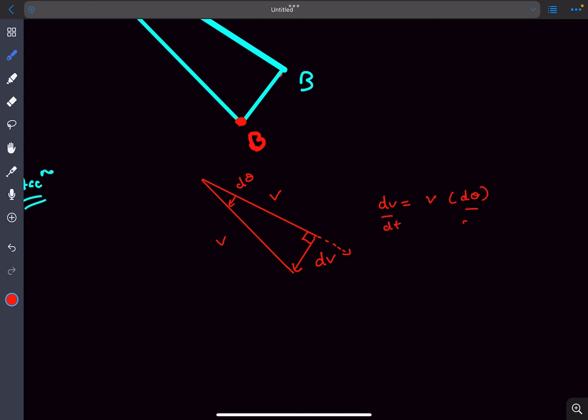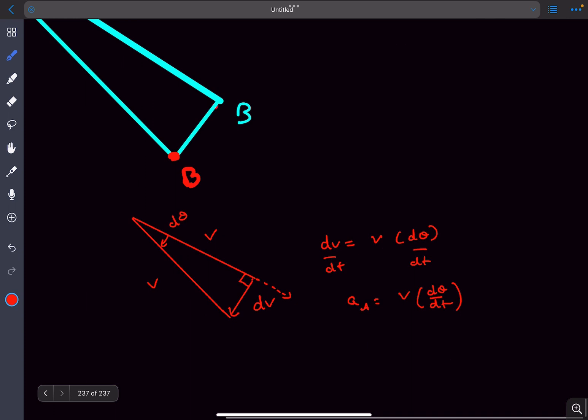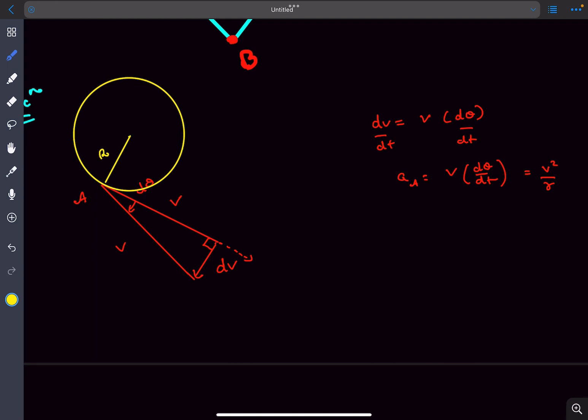If I divide by dt on both sides, then the acceleration of particle A comes out to be v times d theta by dt. And d theta by dt we determined over here, and this would simply come out to be v squared divided by r. We can even find out the radius of curvature of the particle A at this instant. The radius of curvature of that particle would be simply v squared divided by the normal acceleration. This would be v squared divided by v squared by r. So the radius of curvature of particle A is simply r.